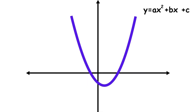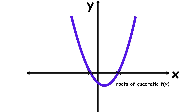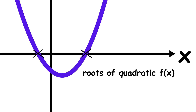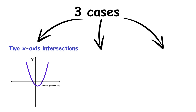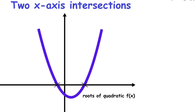The graph of a quadratic function can help you find the points where the function attains a value of zero, often called the zeros or roots of the function. These are the points where the graph intersects the x-axis. For a quadratic, there are three cases. Two x-axis intersections: the function has two real-valued zeros, each with multiplicity 1, and the discriminant b squared minus 4ac is positive.